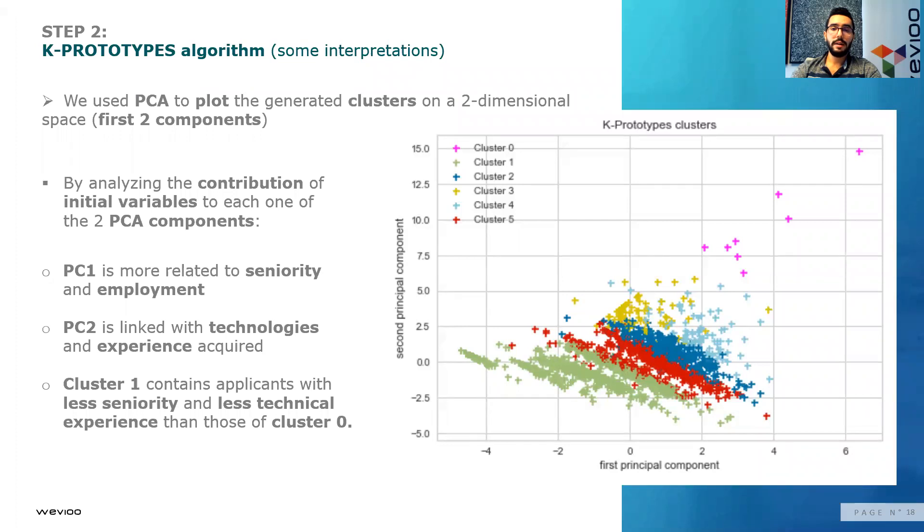To be able to visualize and make interpretations of our K-prototypes clusters, we implemented PCA and used the first two components to make a plot of our clusters. To identify these components, we used the contribution of initial variables to each one of these two components. We found out that the first one is more related with seniority and employment, while the second one is linked with technologies and experience acquired.